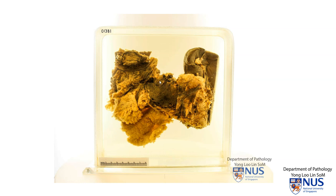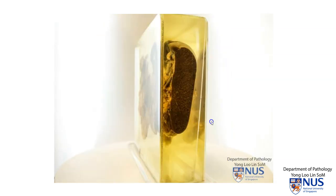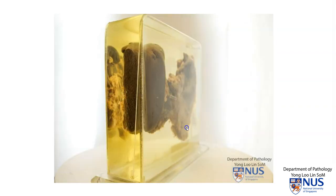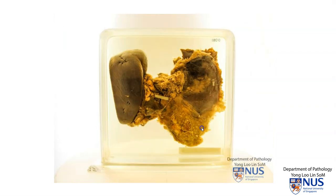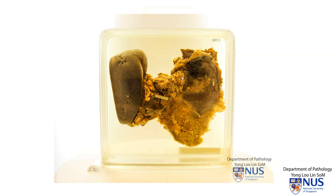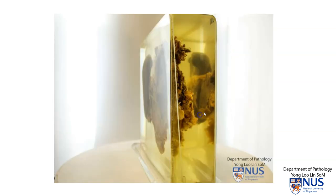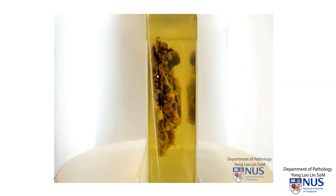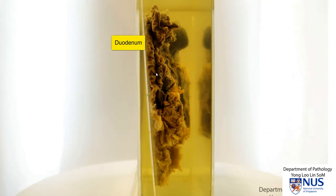Hello, we're looking at a gross specimen that comprises part of the stomach and duodenum, the pancreas, the omentum, and the spleen. It's actually easier to orientate when we turn this specimen around. Now we're looking from the posterior surface. This on the left is the spleen, and this is the pancreas. This is part of the stomach, and this is the omentum. On this surface, we can actually appreciate the duodenal mucosa.